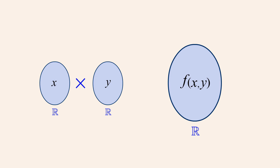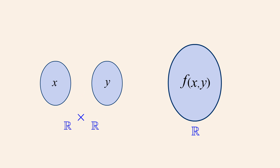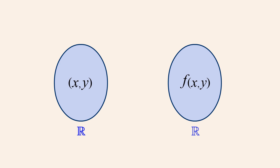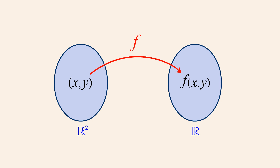Forming the Cartesian product of these sets gives us a set R². R² contains ordered pairs whose coordinates are every possible pair of two real numbers. Each ordered pair is a single input element, which the function can then map to a single output value. So the domain of a function of two real variables is typically R², and for a function which can produce any real value, the range is R.